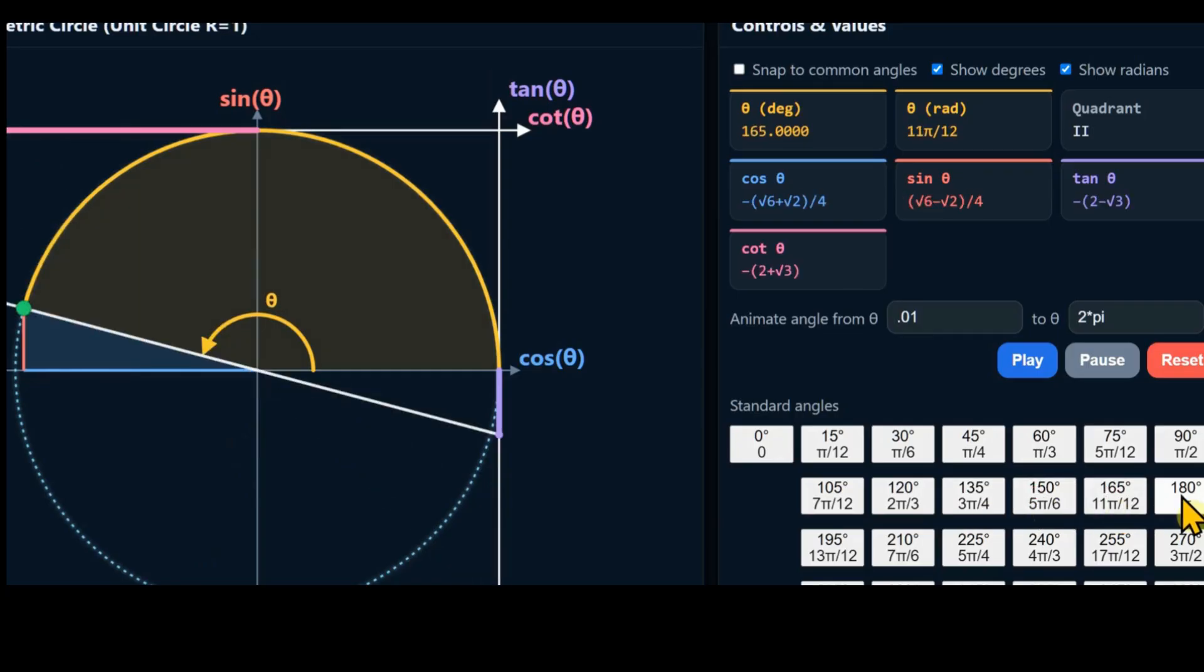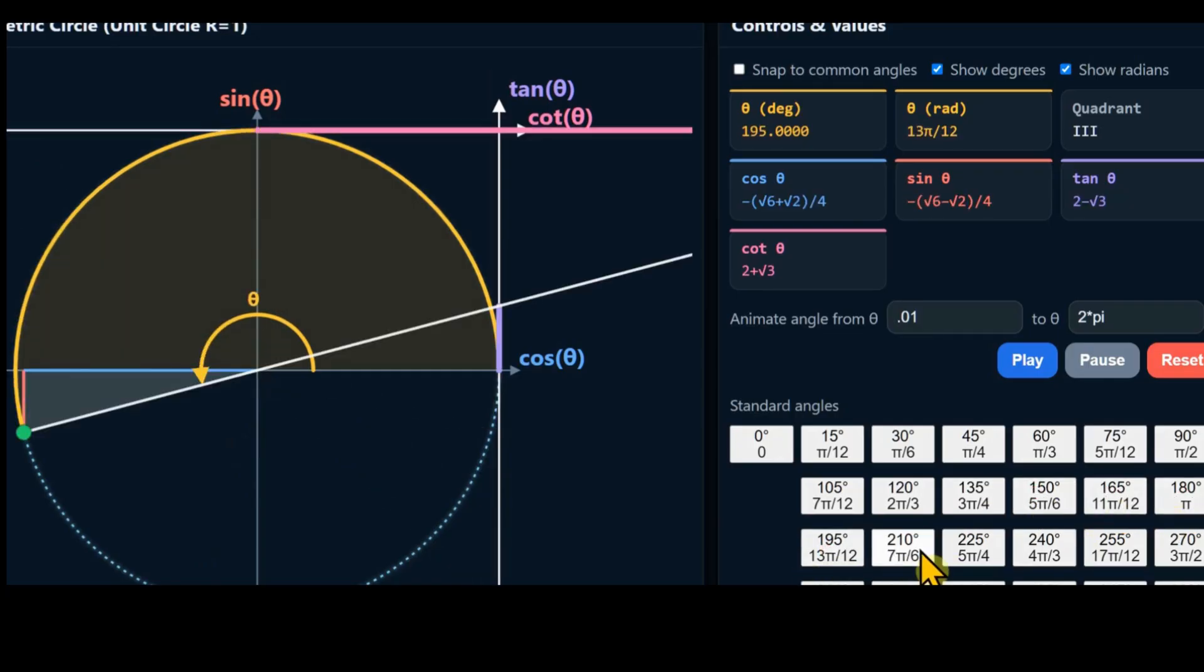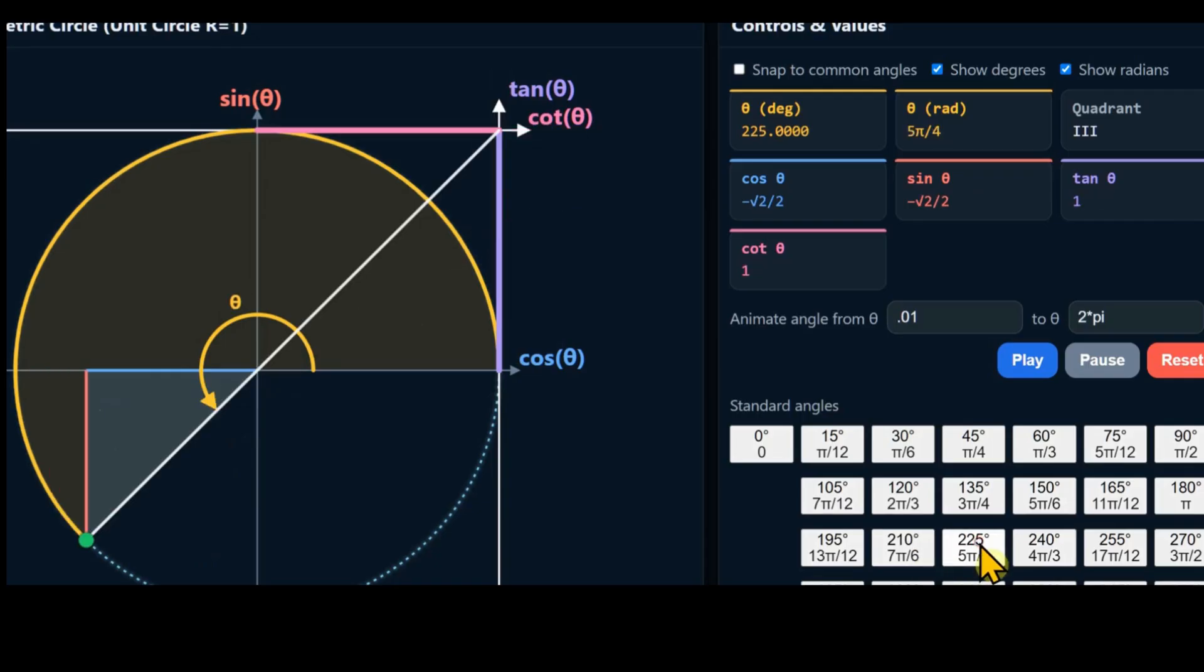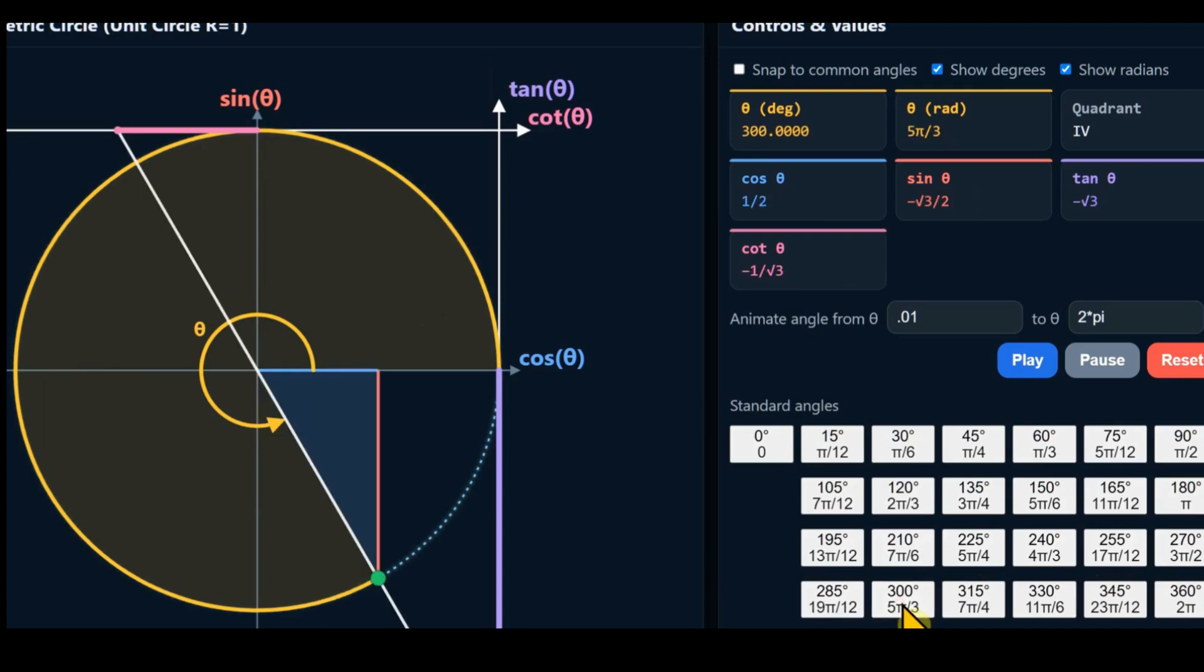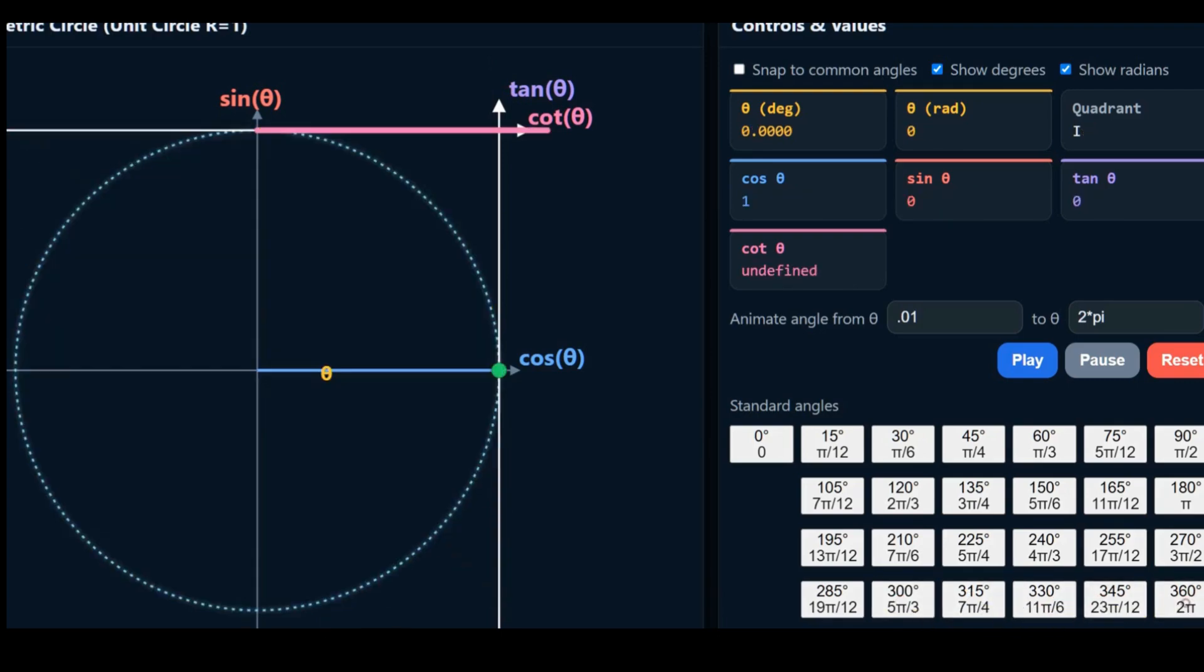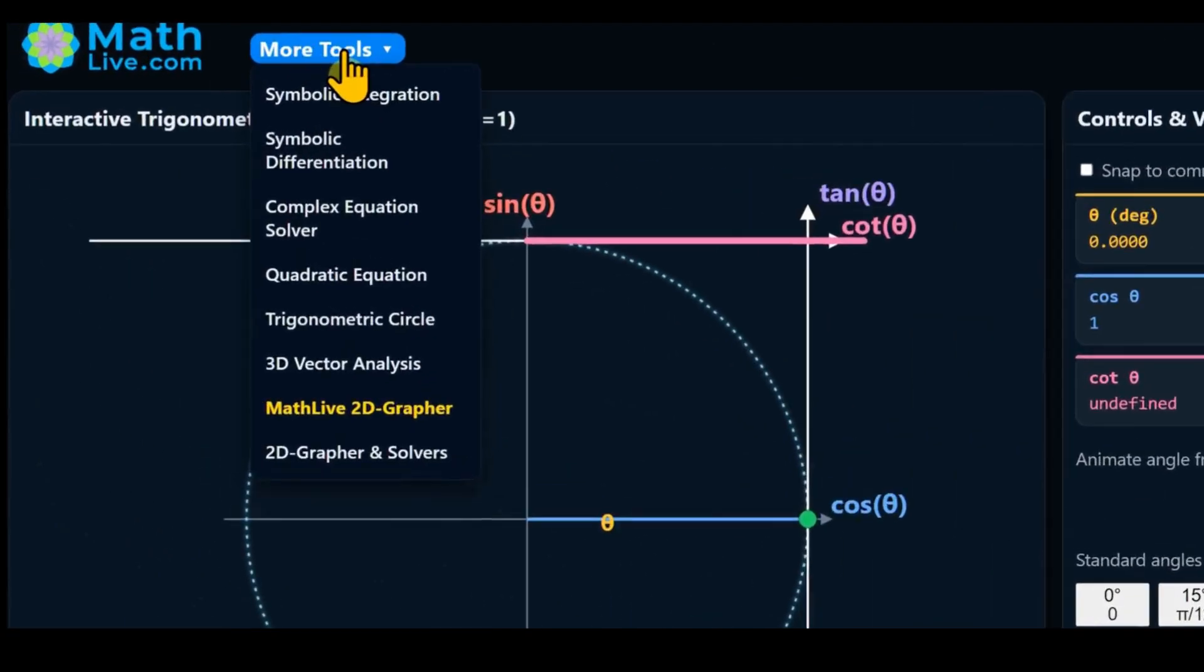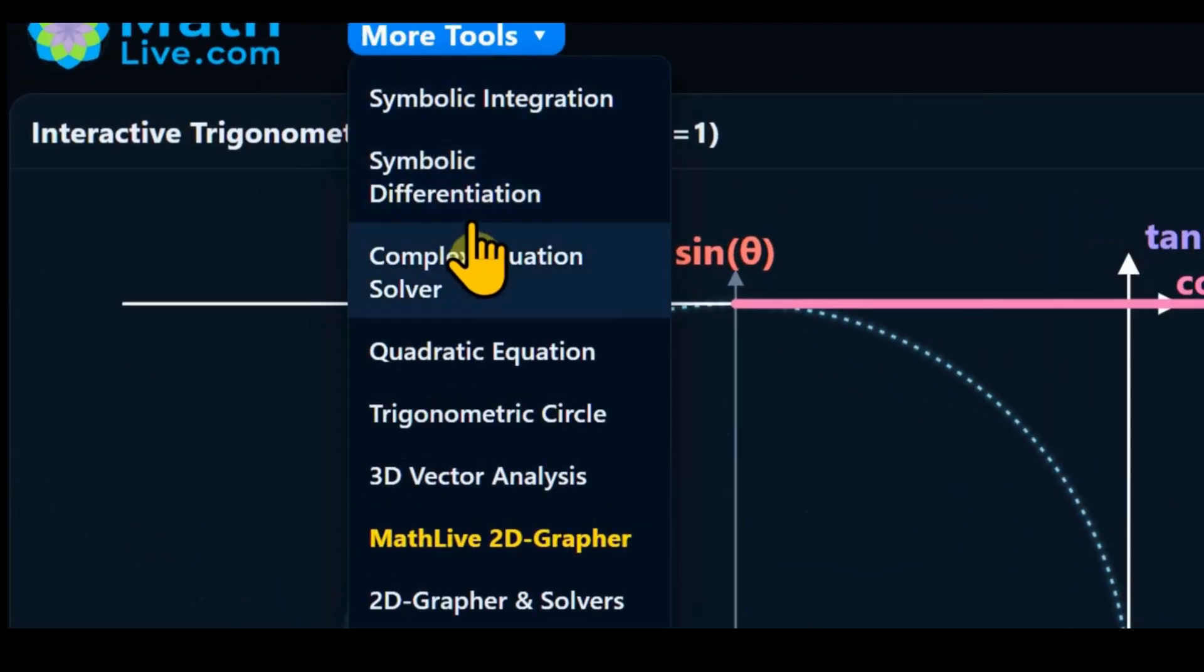Being able to visualize the sine and cosine in your mind at different angles on the trigonometric circle is one of the best ways to truly understand how to calculate their values without the need for memorization. Go to mathlive.com and open the trigonometric circle tool. It's an amazing visual learning aid. Spend a few minutes exploring it.